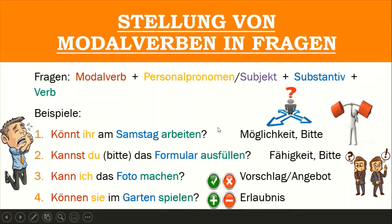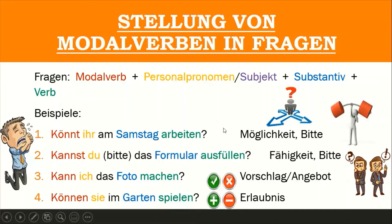It can also show possibility if, for example, we know that on weekends we are busy with other things, so maybe it is not easy to find time to go to the office on a weekend day. In this way, a question like this, asking someone to come to work on a Saturday, would show both a request and possibility.